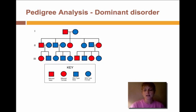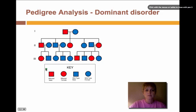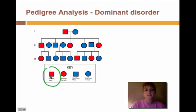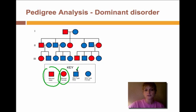Let's start off by talking about the key. In this particular pedigree, an affected male is a red filled-in square, an affected female would be a red filled-in circle. On pedigrees you'll always see females as circles and males as squares. The blue indicates 'wild type,' which just means they're not affected by the disorder.